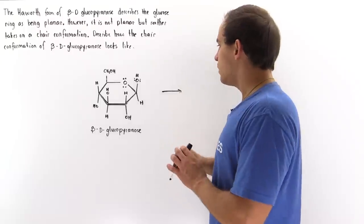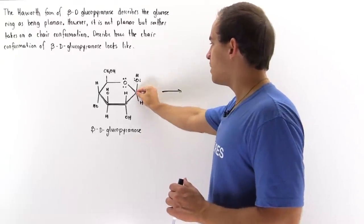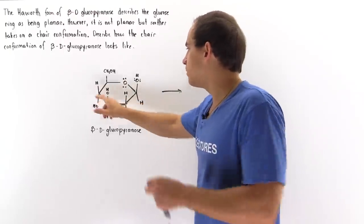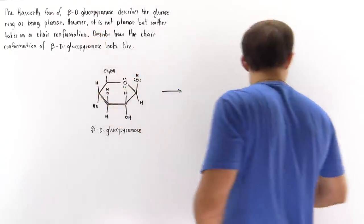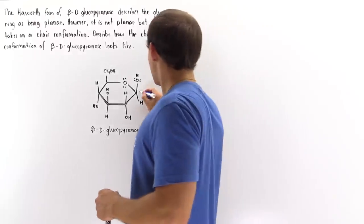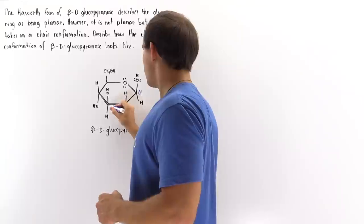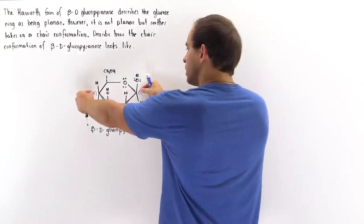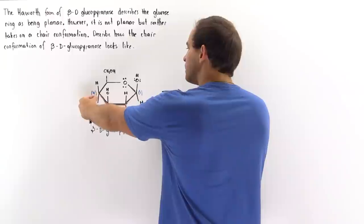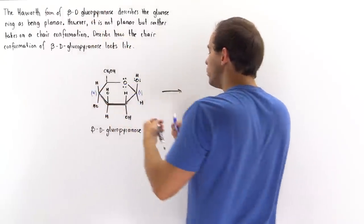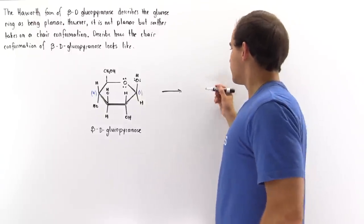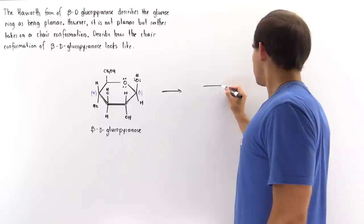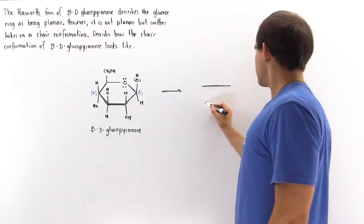To flip our molecule, we take carbon number one and pull it downward, while we take carbon number four and pull it up. So carbon number one, two, three, and four — we pull carbon number one down and carbon number four up, and when we do this we basically transform our molecule into its chair conformation. So let's create our chair conformation, which basically looks something like this.